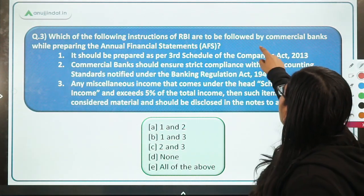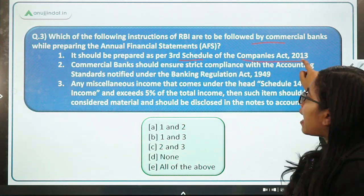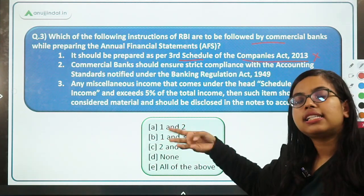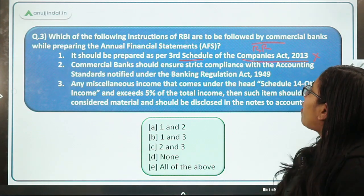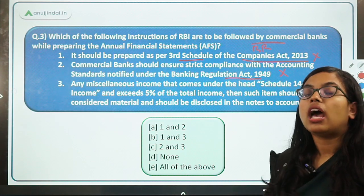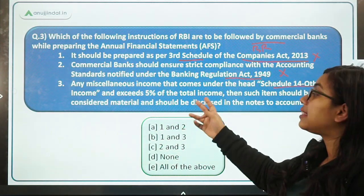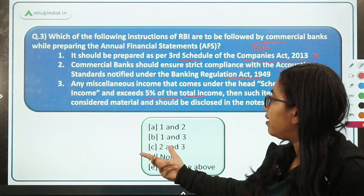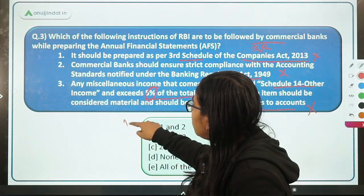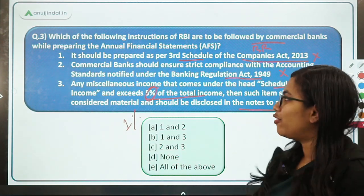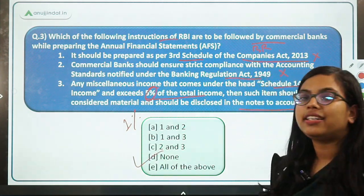The last question asks: which of the following RBI instructions are to be followed by commercial banks while preparing annual financial statements? Statement one: it should be prepared as per the third schedule of the Companies Act 2013 — no, it should be prepared as per the third schedule of the Banking Regulation Act 1949. Statement two: commercial banks should ensure compliance with accounting standards notified under the Banking Regulation Act 1949 — no, it should be under the Companies Act rules. Statement three: any miscellaneous income exceeding 5% of total income should be disclosed — wrong, it should be 1%. All three statements are incorrect, so option D, none of the above, is the correct answer.